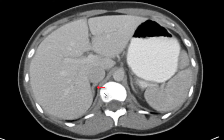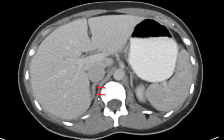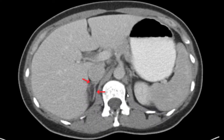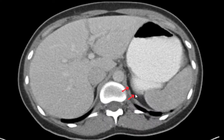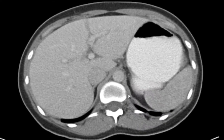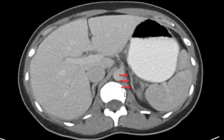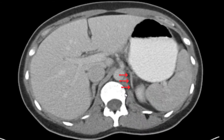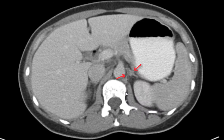Coming up looking at the adrenal glands. The right adrenal gland looks completely normal. The left adrenal gland is basically smashed up in the left upper quadrant like it tends to be, but looks okay.